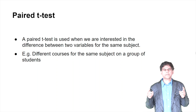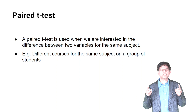The paired t-test is used when you're interested in the difference between two variables in the same subject or same group. For example, measuring different scores from the same subject in a group of students — that's called a paired t-test.